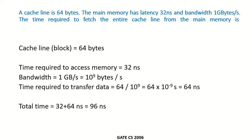A cache line is 64 bytes. The main memory has a latency of 32 nanoseconds and a bandwidth of 1 gigabyte per second. The time required to fetch the entire cache line from the main memory is what?